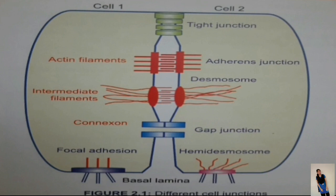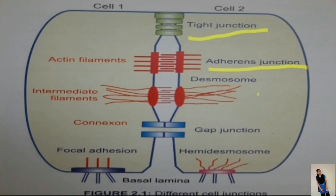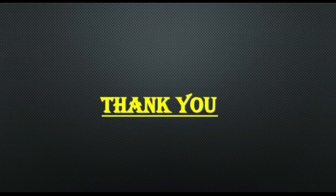Here in this picture you can see all types of junction — tight junction, adherence junction, desmosome, gap junction, and hemidesmosome. So guys, this was our cell biology video on cell junctions. Hope you all had a good session and are clear now. If you have any queries related to my topic, comment down below and I will definitely make a video according to your queries. Thank you so much for your love and support, and thank you for watching our channel.